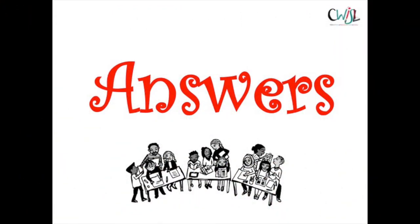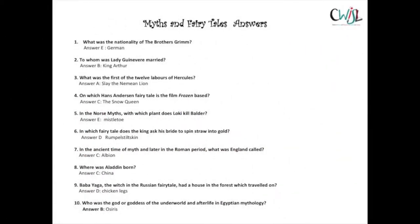Let's go through the answers for myths and fairy tales. Number one: the nationality of the Brothers Grimm — answer E, German. Number two: Lady Guinevere was married to answer B, King Arthur. Number three: the first of the twelve labours of Hercules — answer A, slay the Nemean lion. Number four: the Hans Christian Andersen fairy tale Frozen is based on — answer C, The Snow Queen. Number five: the plant Loki uses to kill Baldr — answer E, mistletoe.